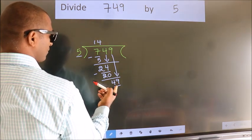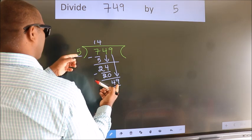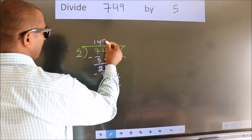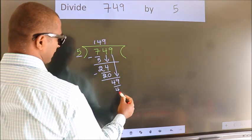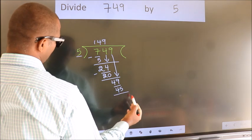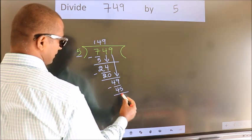A number close to 49 in the 5 table is 5 nines 45. Now we subtract. We get 4.